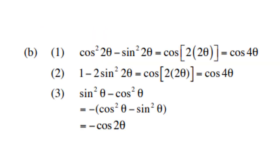Now reversing the cosine double angle rule: cos² 2θ minus sin² 2θ equals cos of twice 2θ, which is cos 4θ. The expression 1 minus 2 sin² 2θ equals cos of 2(2θ), which is also cos 4θ. And sin² θ minus cos² θ — taking out a negative and switching — gives minus cos 2θ.